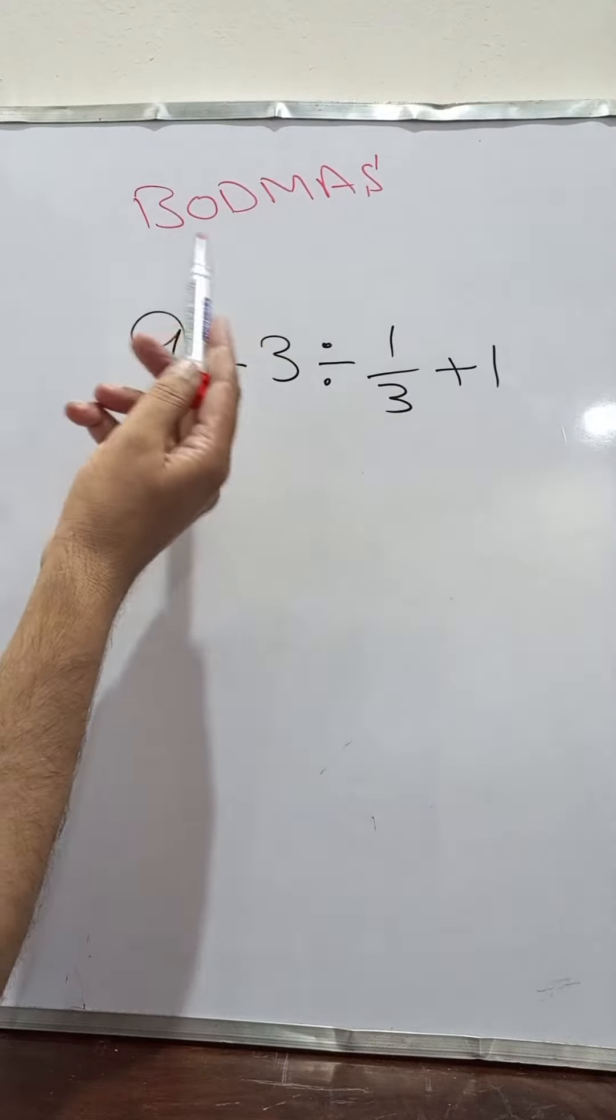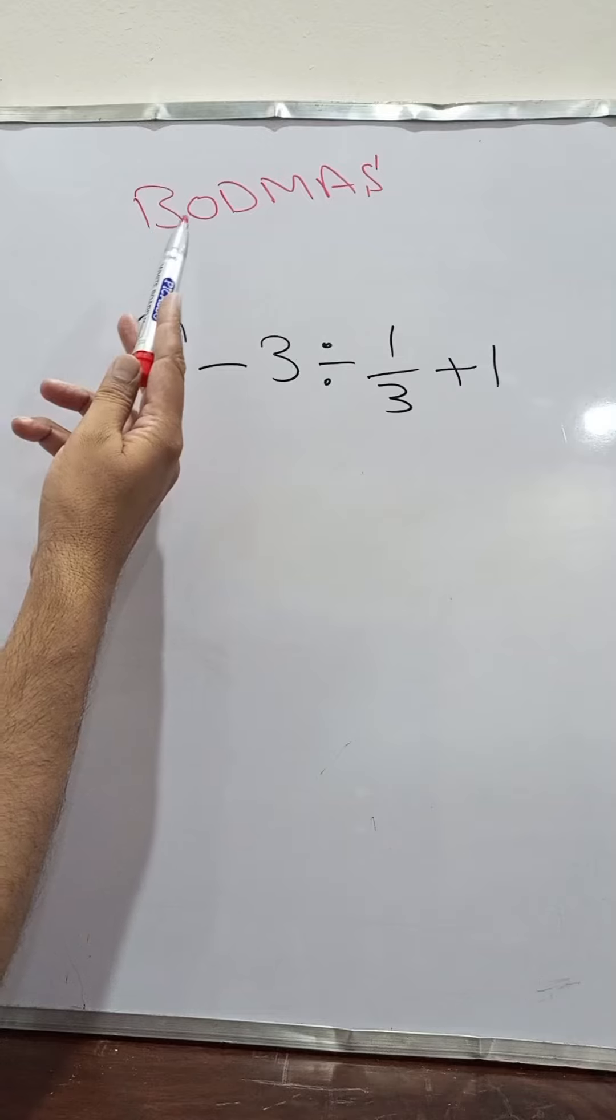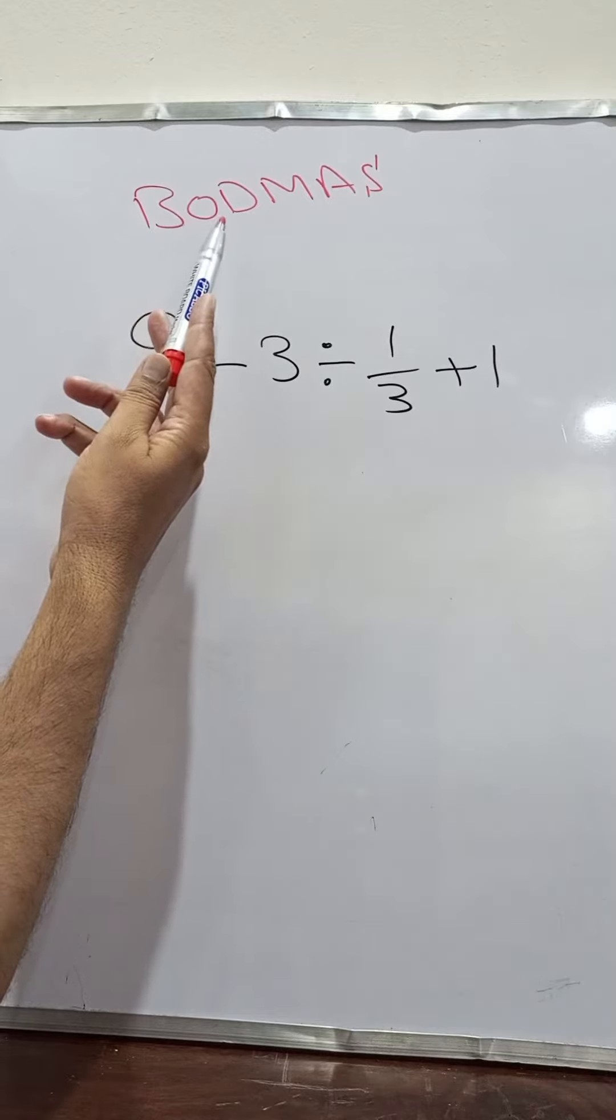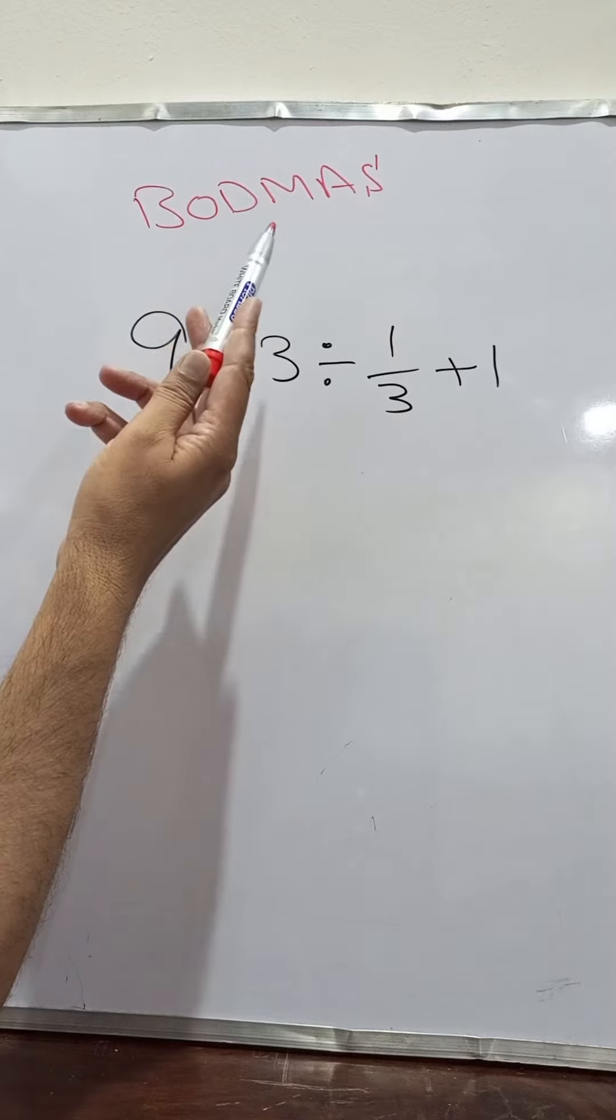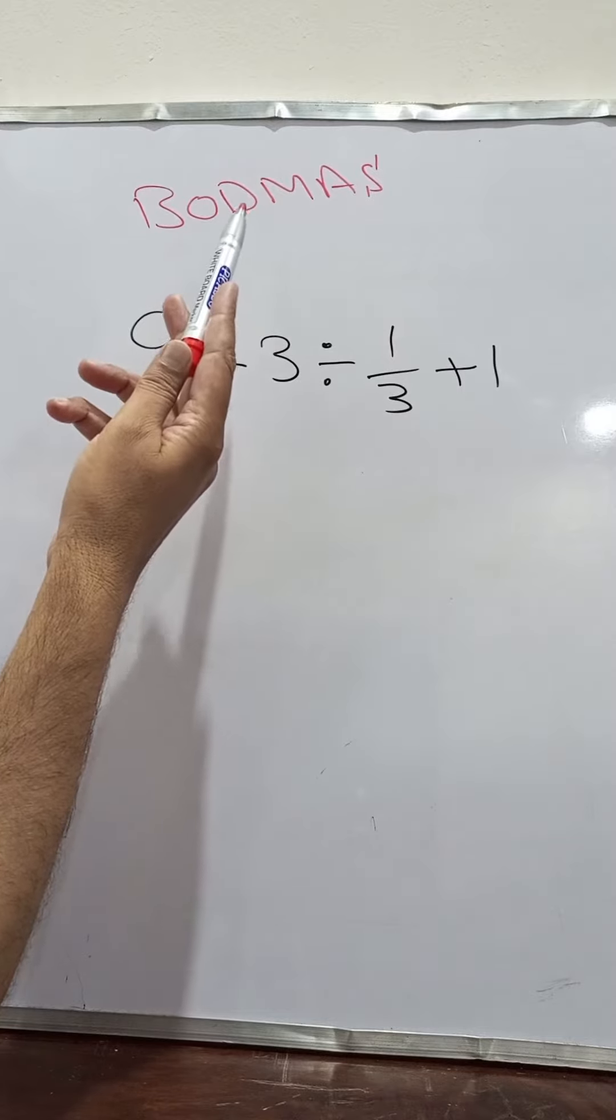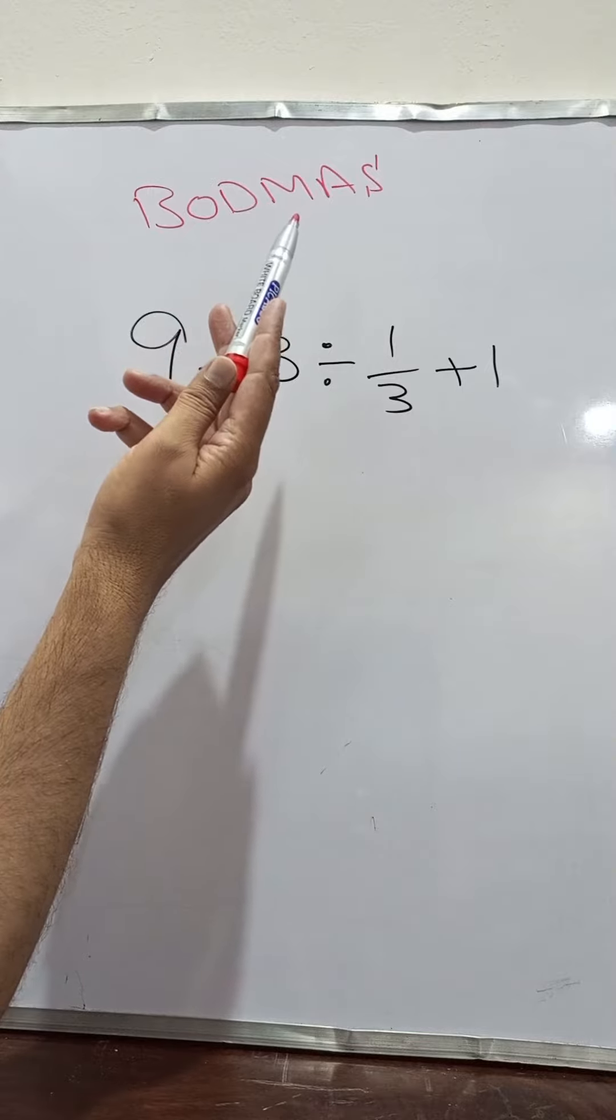Let me remind you what is BODMAS here. B stands for bracket, O for order. Next we have division, multiplication, after that addition and S for subtraction.